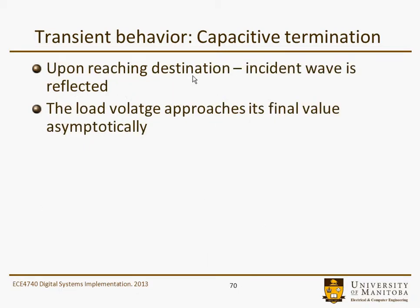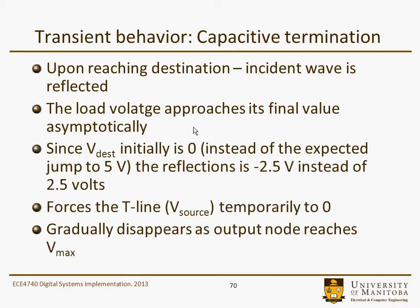Upon reaching the destination, the incident wave is reflected. The load voltage approaches its final value asymptotically. But since the destination voltage is initially zero — it's a capacitor, so it's tied to zero immediately — the reflection is minus 2.5 volts instead of the 2.5 volts that we'd expect in the open circuit case. And that's sort of what's responsible for V_source temporarily going to zero, which gradually disappears as the output node reaches V_max.